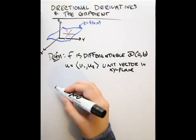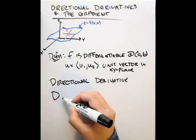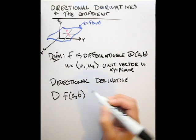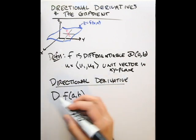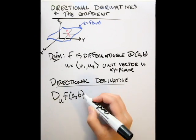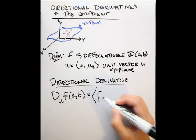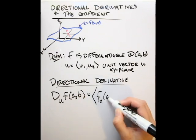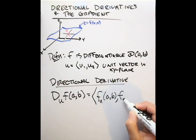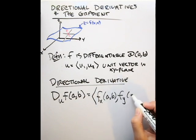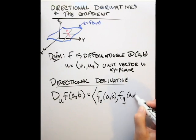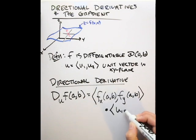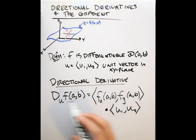With this defined, we can now explain the directional derivative. The directional derivative of F at the point AB in the direction of U is defined as follows: we have a vector comprised of the partial derivative of F with respect to x at AB, and the partial derivative of F with respect to y at AB, and then we take the dot product of this vector with U = (U1, U2). So this is our directional derivative.